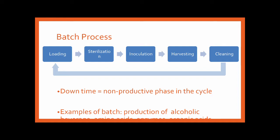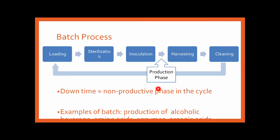The downside of batch process is that there is always a downtime, so you have intermittent periods of production, then downtime, production, then downtime again. Examples of products made by batch process are alcoholic beverages, enzymes, and amino acids. The production phase alternates with the downtime where you are not actually doing much.